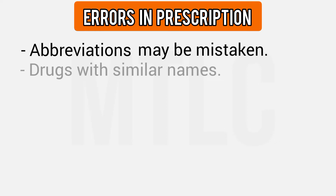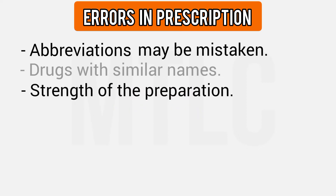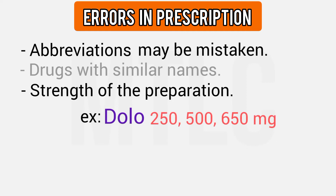Another error is similar drug names. For example, prednisone and prednisolone — we know how to read them normally, but if written in capital letters such as 'PRED', you cannot distinguish between prednisolone and prednisone. So, you have to read the entire name of the drug — that is a big error to avoid. The third source of error is preparation of strength. For example, Dolo tablet — if you are prescribing paracetamol, how many milligrams must be mentioned. That's how you decide the strength of the preparation.